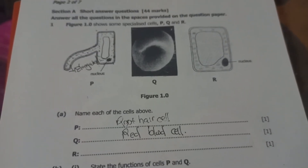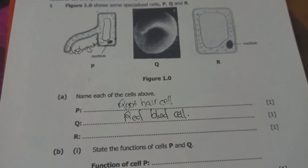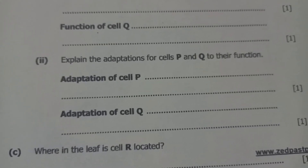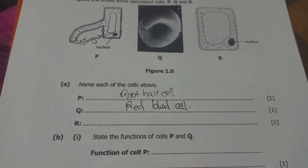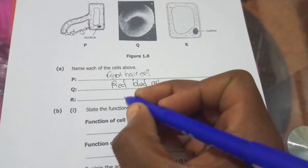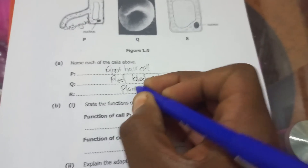Then we have cell R. Looking at the question — where in the leaf is cell R located? — the diagram we have here is that of a plant cell, specifically a palisade cell. So for the name, we are just going to say plant cell.